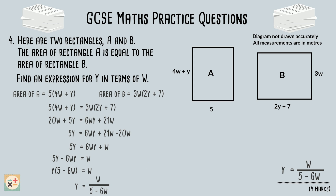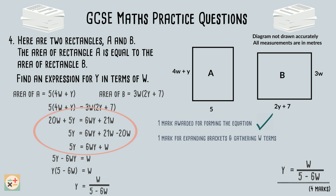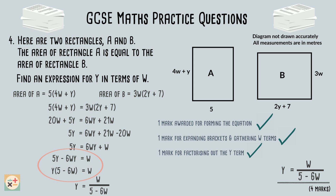This question is worth a total of 4 marks: one mark for forming the initial equation; the next mark for expanding the brackets and gathering the W terms on one side of the equation; the third mark for factorising out the Y term; and the fourth and final mark for the correct final answer.